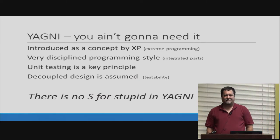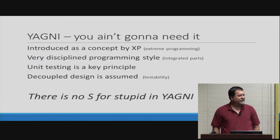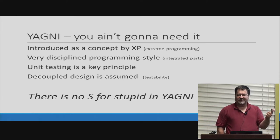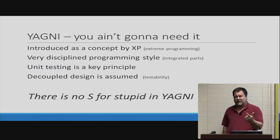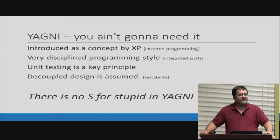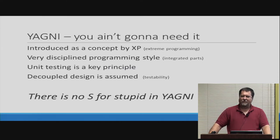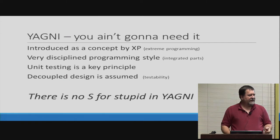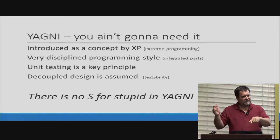YAGNI — you ain't going to need it. It came out of XP, extreme programming, which is a very disciplined programming style: you program in pairs always, you unit test always. And if you unit test well, you have to have decoupled code or you're going to die. Decoupled design is assumed for testability. That means you've got a very solid decoupled design. There's no S in YAGNI — they're assuming you're not stupid. If you say 'we don't have design, we'll throw in stuff later,' that's stupid. Right now we can make things decoupled right off the front in about five minutes.